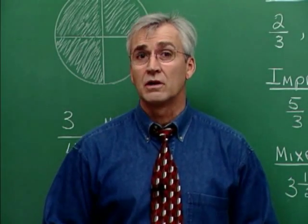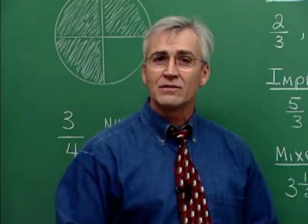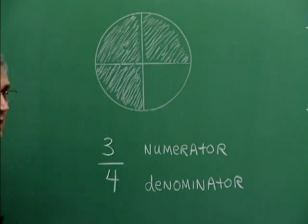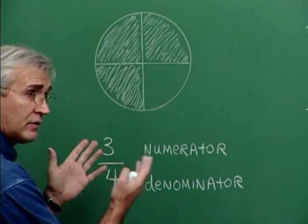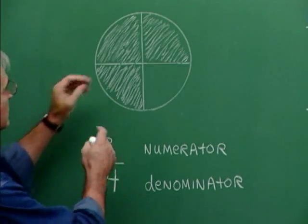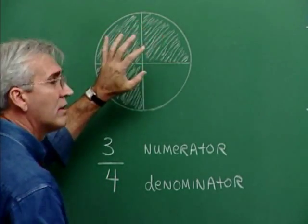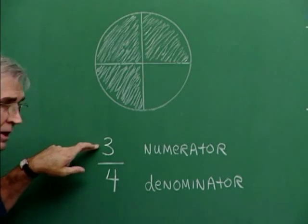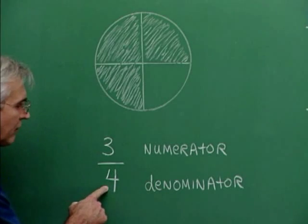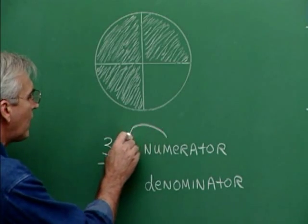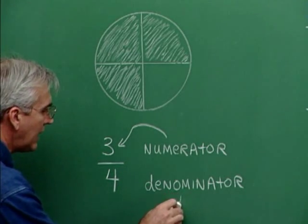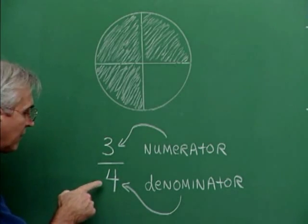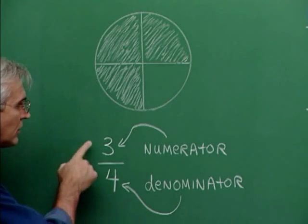Fractions are used to describe parts of wholes mainly. Here I have a circle drawn, subdivided into four sections, and I have shaded three of them. The fraction describing this situation is three over four, or three-fourths. The top number, three, is called the numerator, and the bottom number, four, is called the denominator. The numerator tells how many items we have, and the denominator tells how many items are in a whole. So we have three items shaded out of four items in the entire circle.